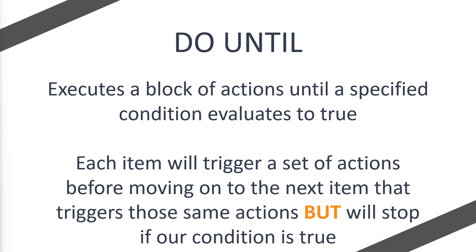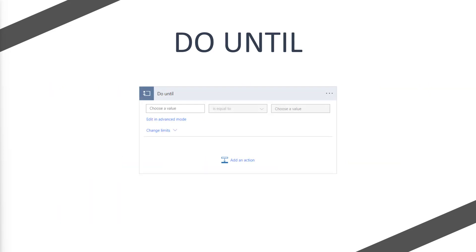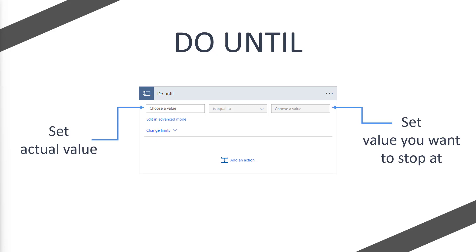Let's move on to what it actually looks like in Power Automate. When you first add the action, you'll see the Do Until box which says 'choose a value is equal to choose a value.' The first 'choose a value' is setting the actual value — so using our number variable example, we would set the number variable there. The middle section lets you change the operator, for example to 'is not equal to', 'is greater than', or 'is less than', among other options. The next 'choose a value' box is where you set the value you want to stop at — so the condition is: the actual value is equal to the value we want to stop at.